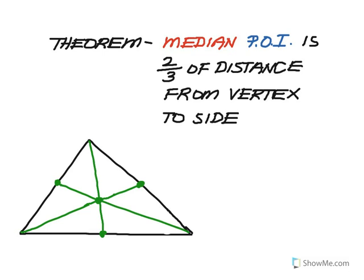The last theorem is about medians of a triangle. Remember that medians go from the vertex of an angle to the midpoint of the opposite side. The theorem is this: the medians are concurrent — they all intersect in one point — and that point is two-thirds of the distance from the vertex to the opposite side of the triangle.